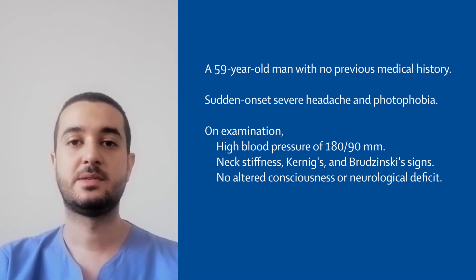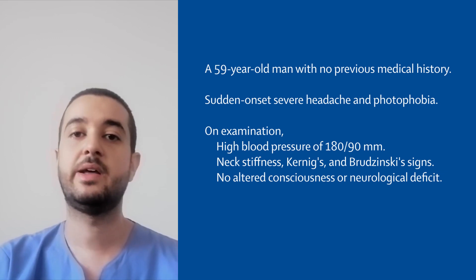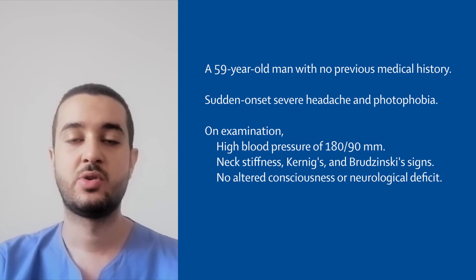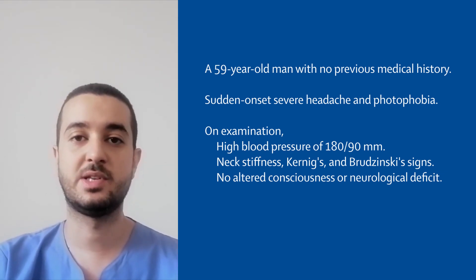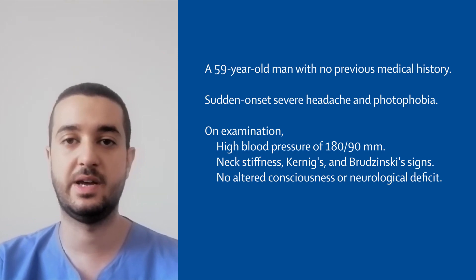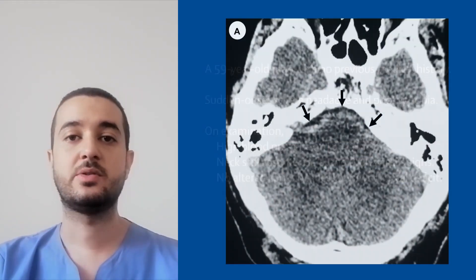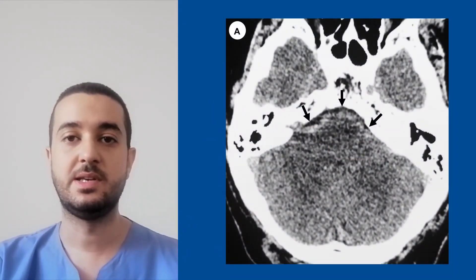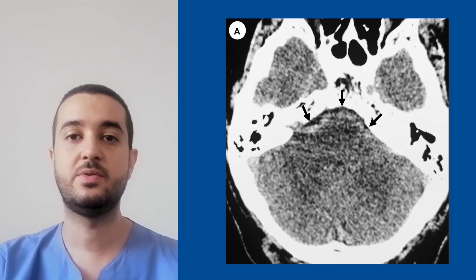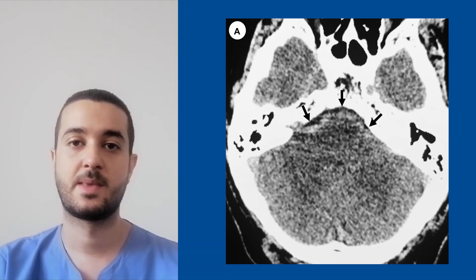On examination, he had high blood pressure, neck stiffness, Kernig and Brudzinski signs with no altered consciousness or neurological deficit. A non-contrast head CT showed diffuse subarachnoid hemorrhage predominantly in the basal cisterns.